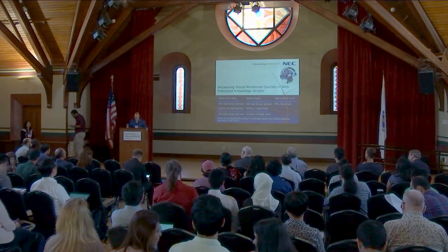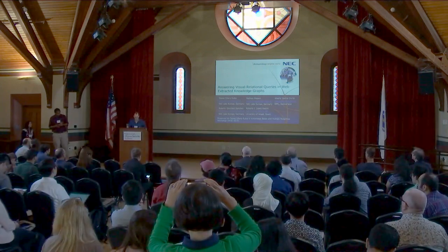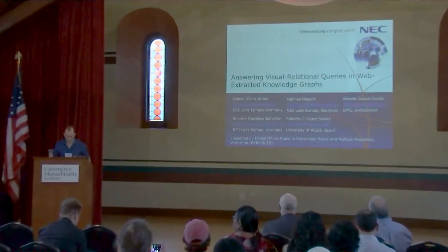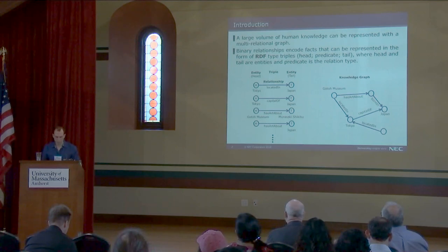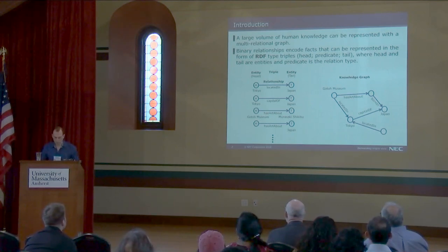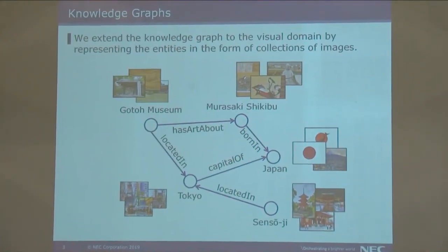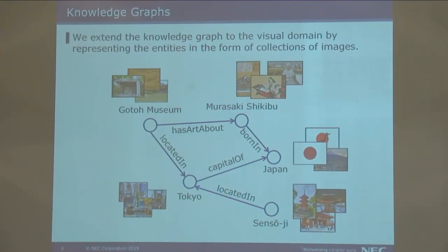Hello everybody. I would like to present our work on answering visual relation queries in web-structured knowledge graphs. A large volume of human knowledge can be represented with a multi-relational knowledge graph. We usually build knowledge graphs with symbolic entities and relations. We extended the typical knowledge graph to the visual domain by representing entities not by a single symbolic entity, but by a collection of images instead.